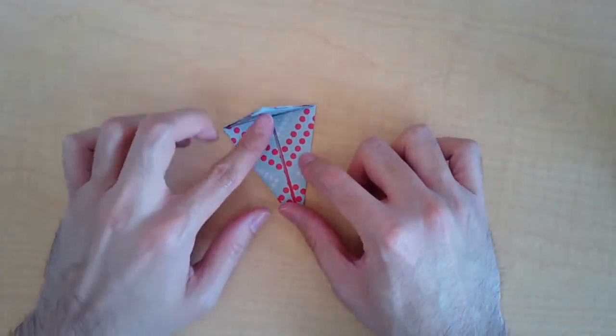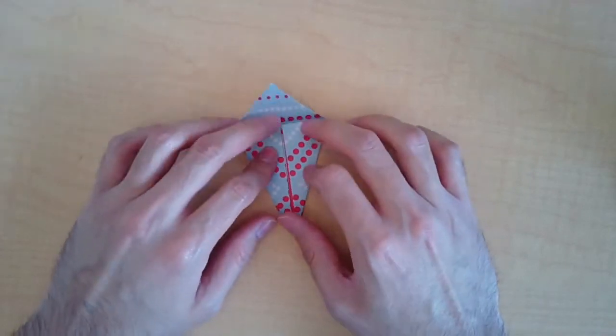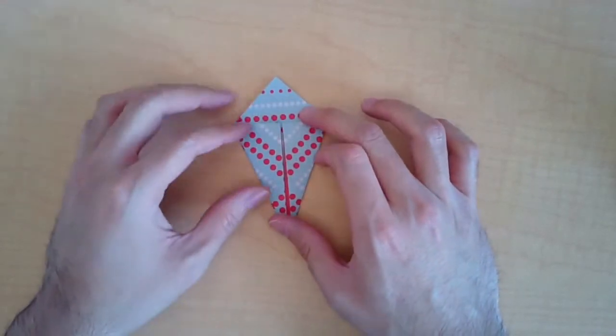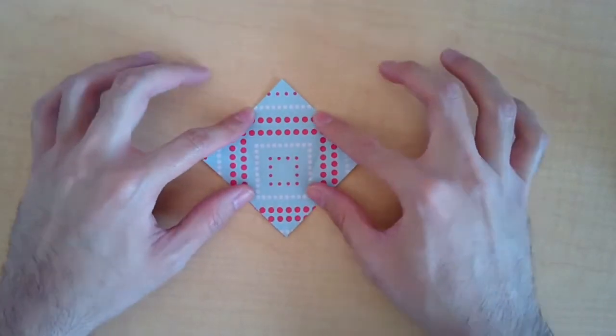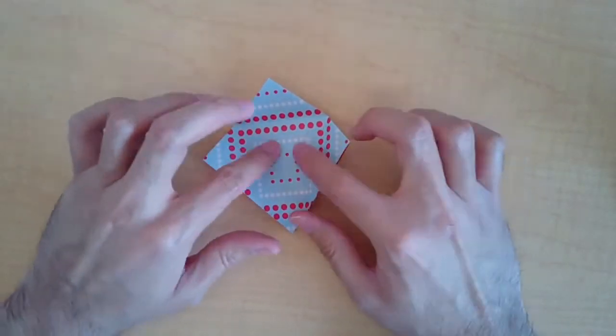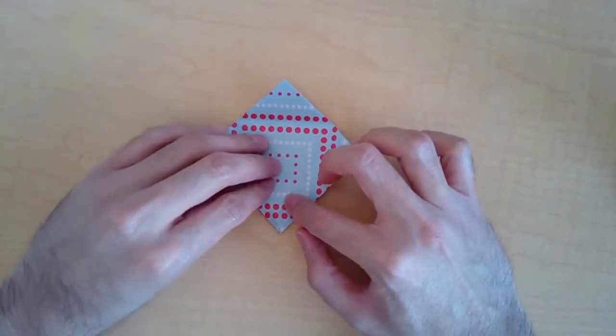And you're going to have this top flap here - you're going to open that up. And then you're going to open these two up as well, so you're going to be back to the square.